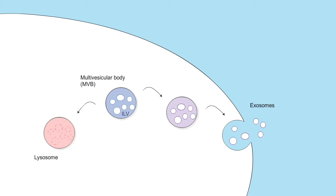But is sequestration of cargos onto ILVs really a trap? Or does an escape route exist? It has long been speculated that ILV membranes can fuse back to the limiting membrane of the MVB through a process termed retrofusion. Although retrofusion has until now never been directly observed, there are compelling clues to its existence. For example, retrofusion is thought to play an important role in exosome biology.